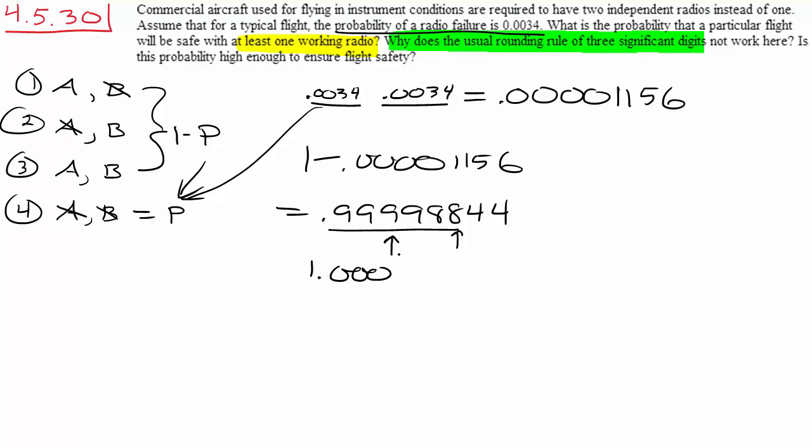I mean a probability of one tells us that the thing is guaranteed to happen, which means we are guaranteed to have at least one working radio, and that's not true.